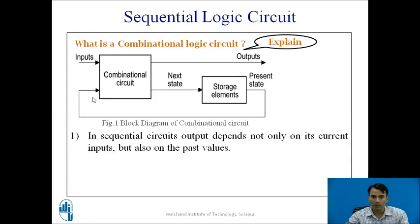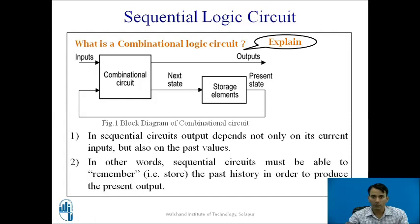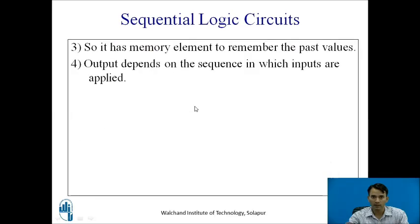The properties of sequential logic circuits: the output depends not only on the current input but also on past values. In other words, a sequential logic circuit must be able to remember the past values in order to produce the present value, which is fed back to the combinational logic circuit to produce the present output. Since it has to remember past values, it must have a memory element, and the output depends upon the sequence in which the inputs are applied.